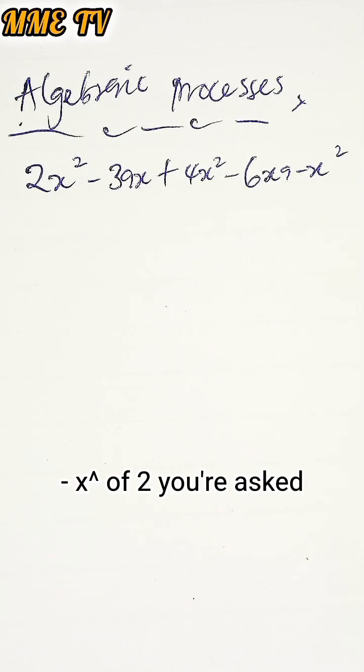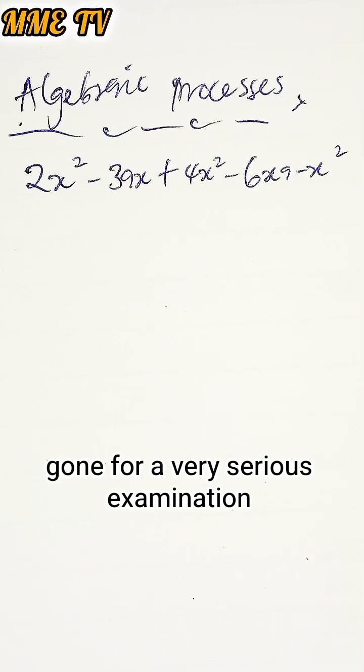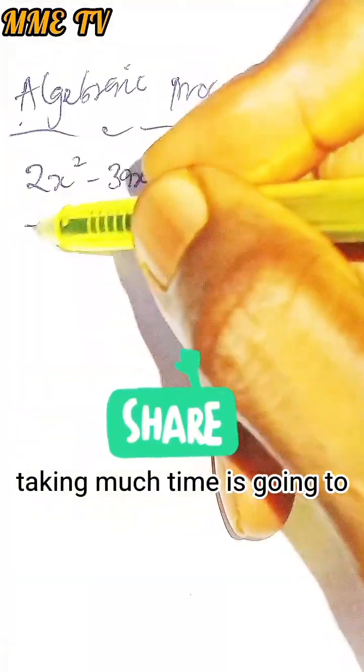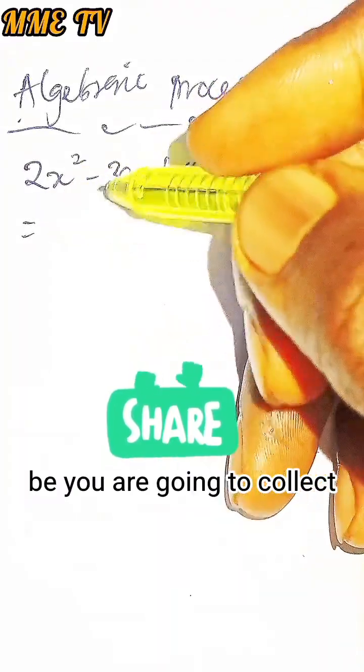Assuming you've gone for a serious examination, the first step without taking much time is to collect the like terms, which is going to be 2x² + 4x²